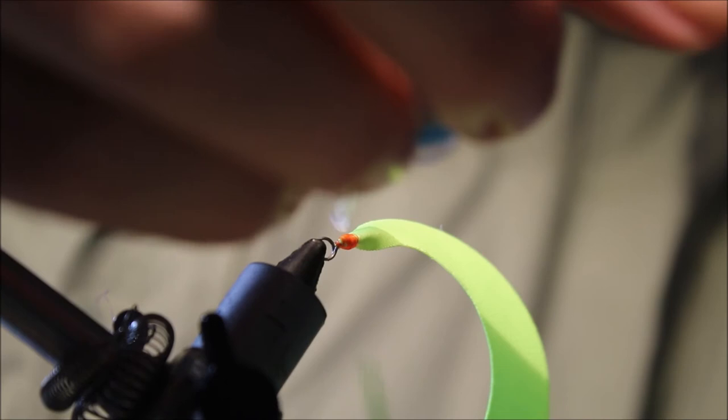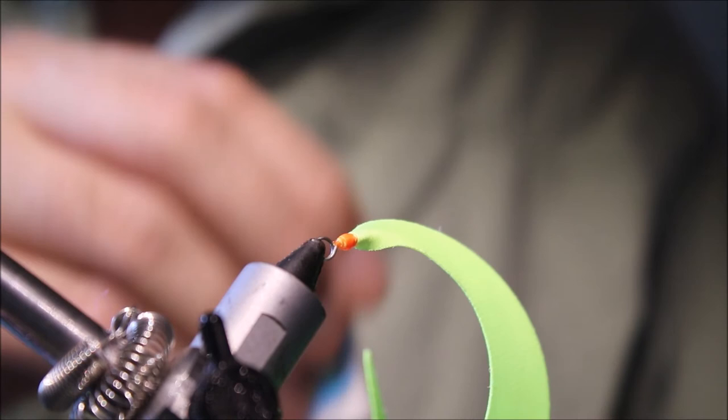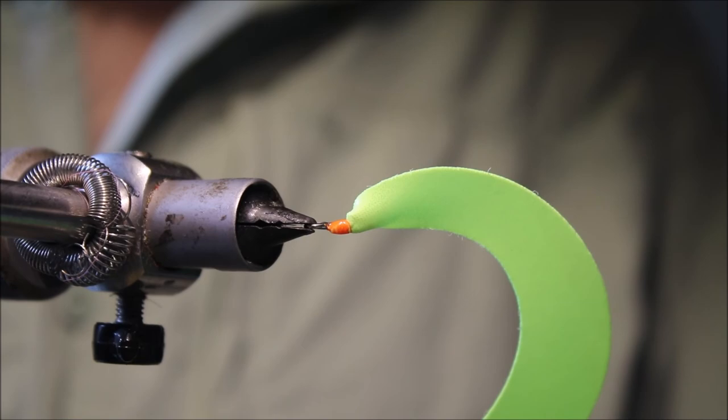I find that doing the superglue and head cement gives you a really nice head, nice hard finish. And makes it a bit more resilient to teeth. I mean a lot of you will be using these for pike, but for other species as well.